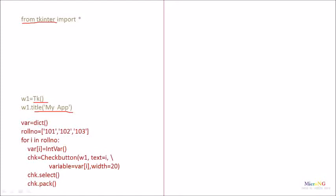The roll number is stored inside a dictionary named roll_number. For each CheckButton we are creating, we require a different IntVar. That is the reason we are creating a dictionary for storing all our IntVars. We use a for loop to create the CheckButtons based on the values in roll_number. For each value, we first create an IntVar variable to store the status of the respective CheckButton — so var[101] stores the state of the first CheckButton, var[102] for the second, and so on.